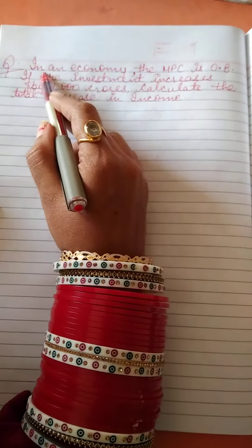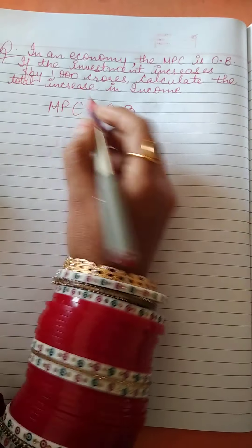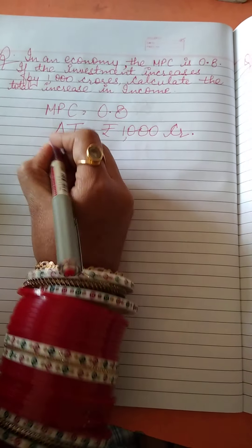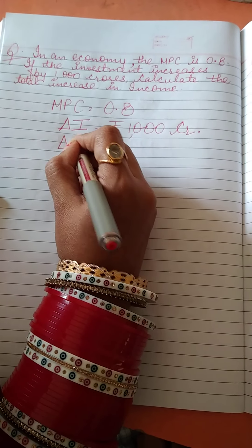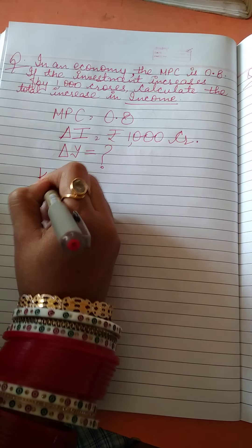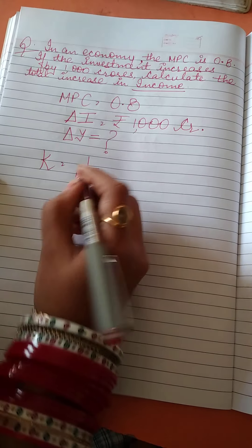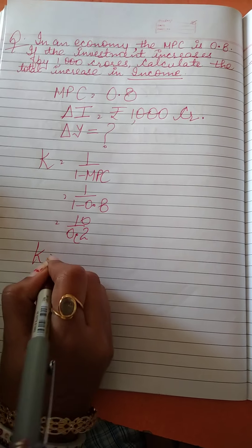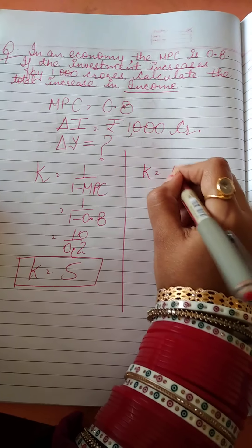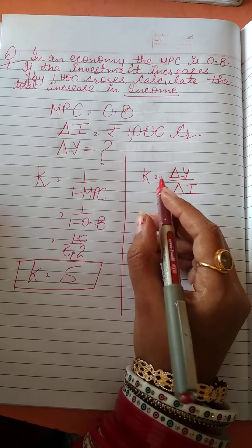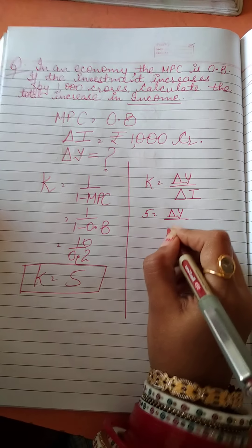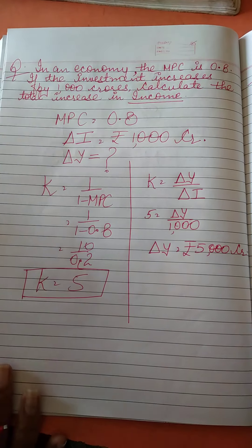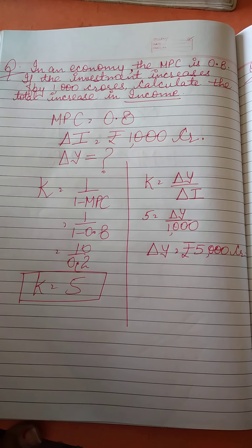First numerical: In our economy, MPC is 0.8 and investment increases by rupees 1000 crore. Find the total increase in income. K = 1/(1−0.8) = 1/0.2 = 5. Now, K = delta Y/delta I, so 5 = delta Y/1000. Therefore, delta Y equals rupees five thousand crore.